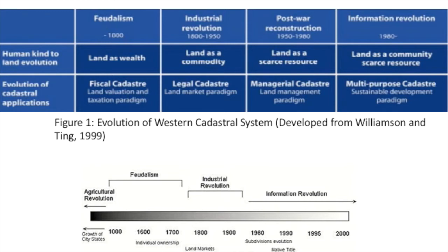During the industrial revolution, land was treated as an item — a legal and tradeable asset. Legal registration and a land market paradigm emerged. After that, in the post-war reconstruction period around the 19th century, land was seen as a scarce resource, treated as a valuable asset with a managerial characteristic, involving land management, land administration, land valuation, land use, and ownership.